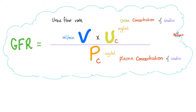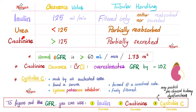GFR equals VOOP. We can use inulin, or we can use creatinine. Which one is better? Inulin — because it exactly equals your GFR. It is freely filtered, not reabsorbed, not secreted. How about creatinine? It is filtered, but it's partially secreted. So creatinine tends to overestimate your GFR by about 5 to 10%. We use both the inulin method and the creatinine method. You can also use Cystatin C.